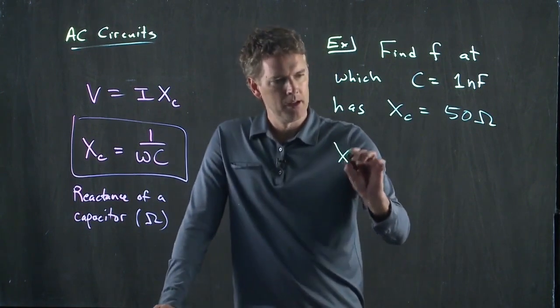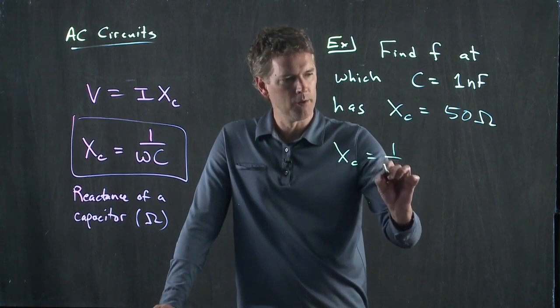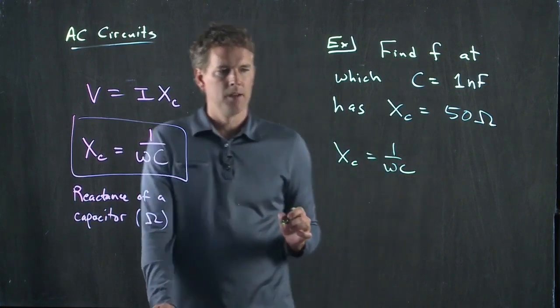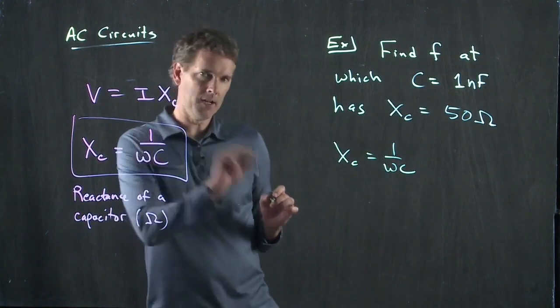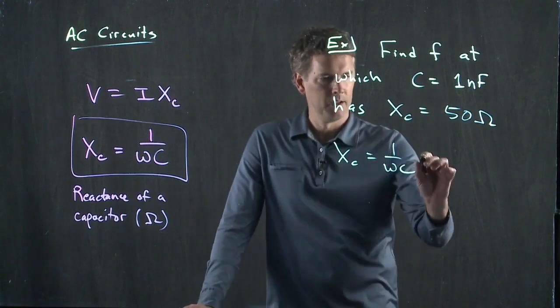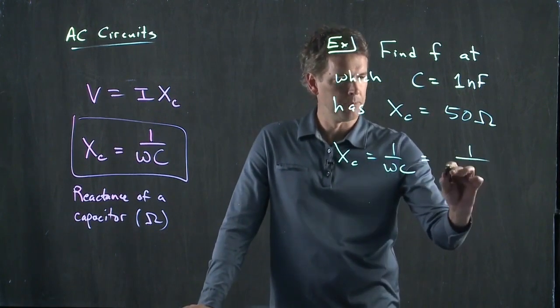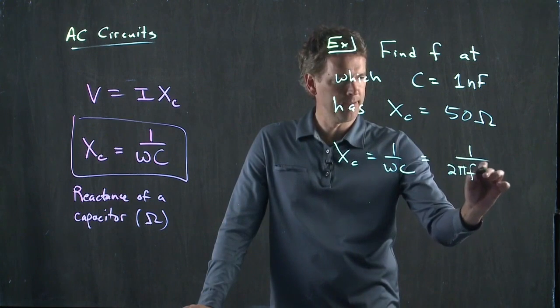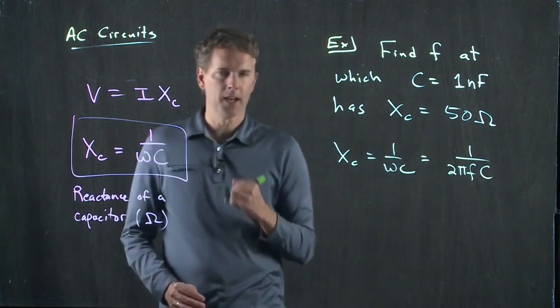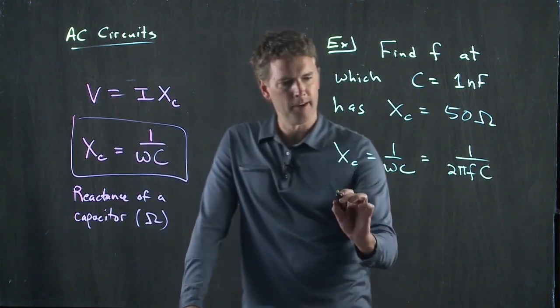X sub C equals 1 over omega C. We know that omega is related to this f by 2 pi, so this becomes 1 over 2 pi f times C, and now we can just solve this equation for f.